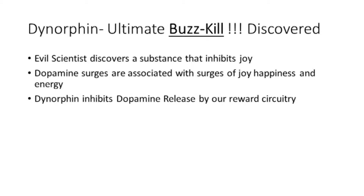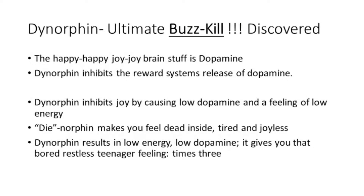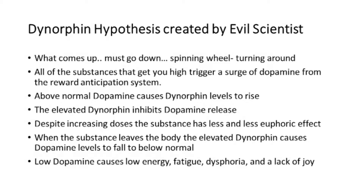Everything that gets you high triggers a surge of dopamine, and that gives you that activated go-go-go feeling. All of the substances that get you high produce that surge of dopamine. Superphysiologic — above normal — levels of dopamine result in dynorphin elevation. You can think of dynorphins as D-I-E-norphins, because they make you feel dead and sluggish and slow.